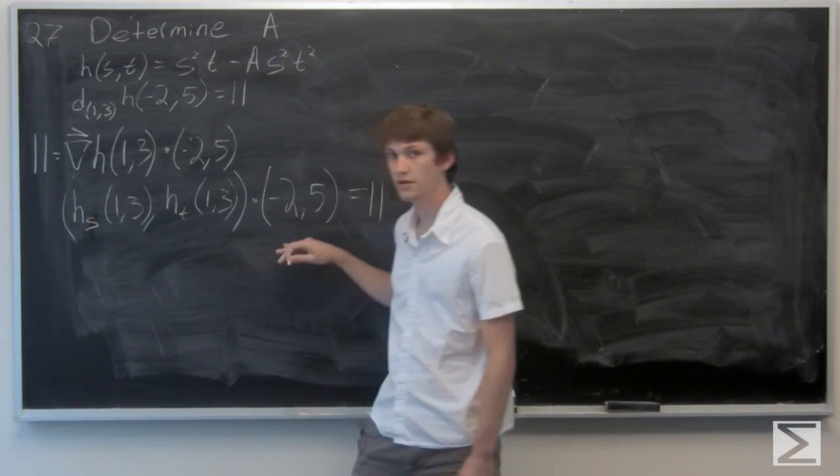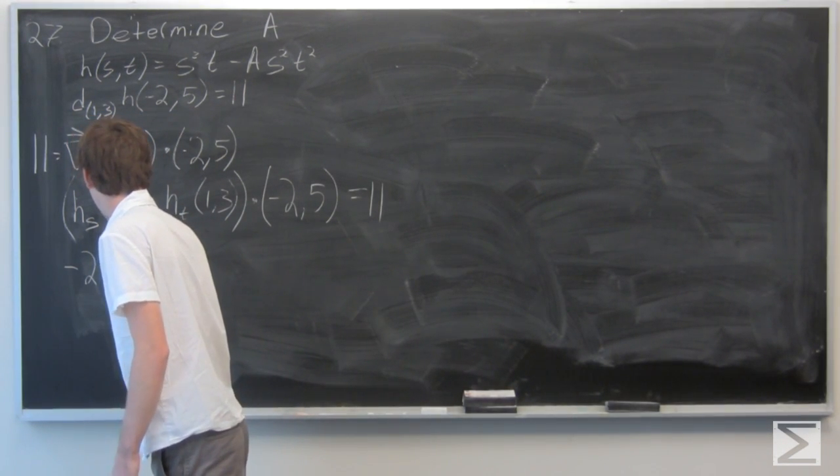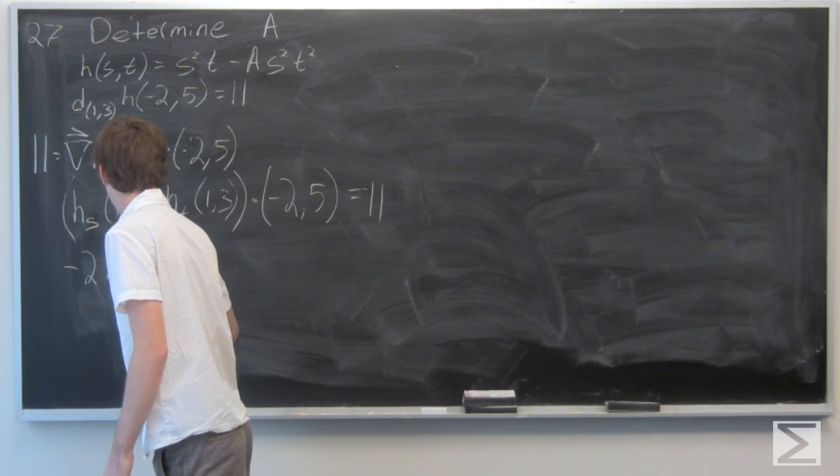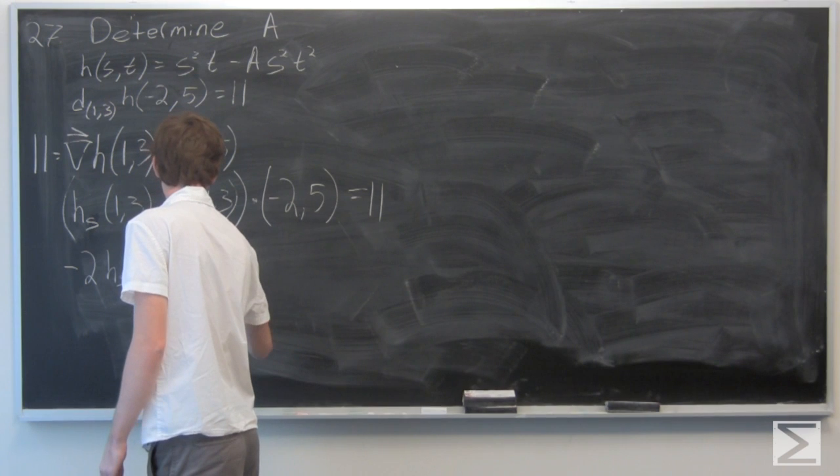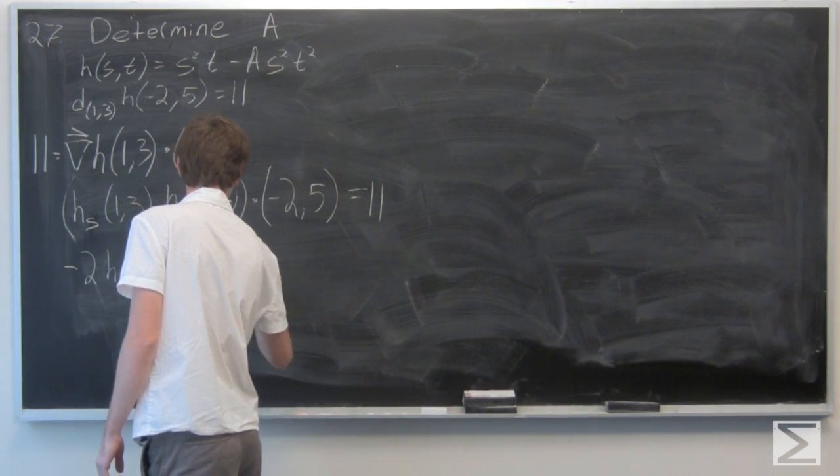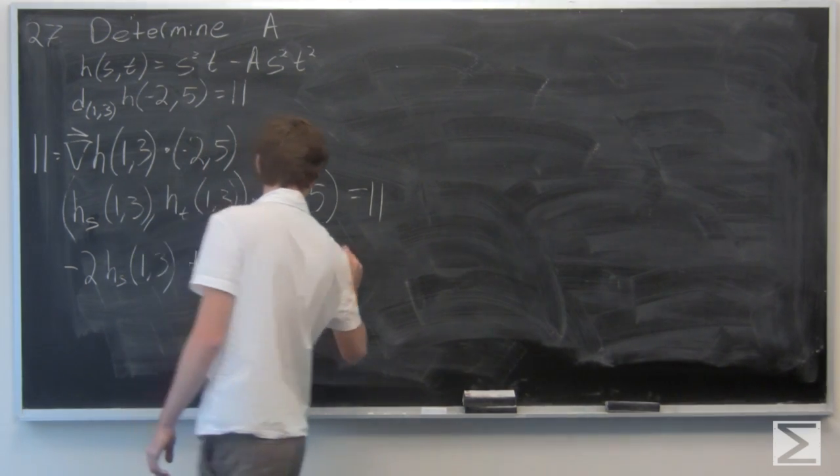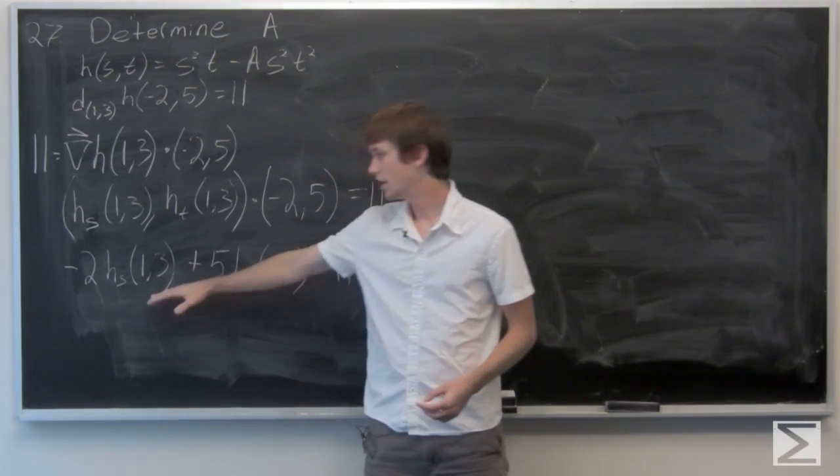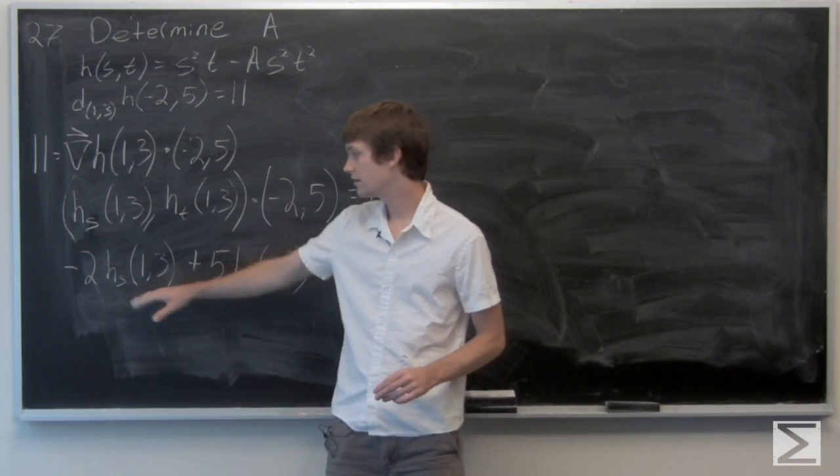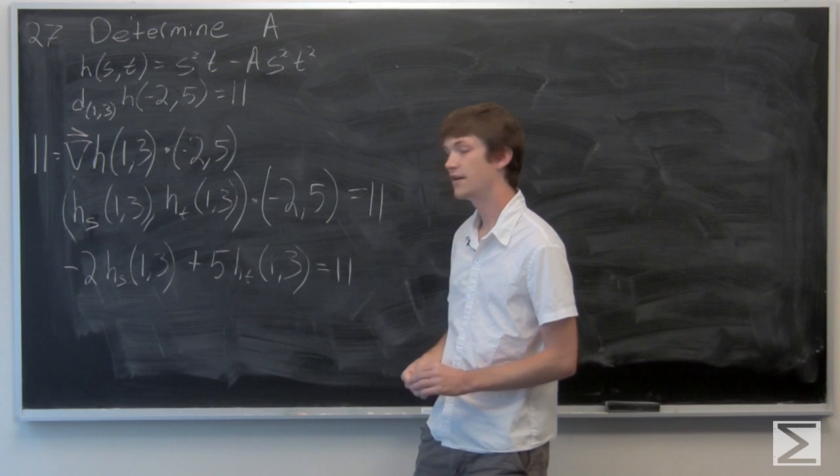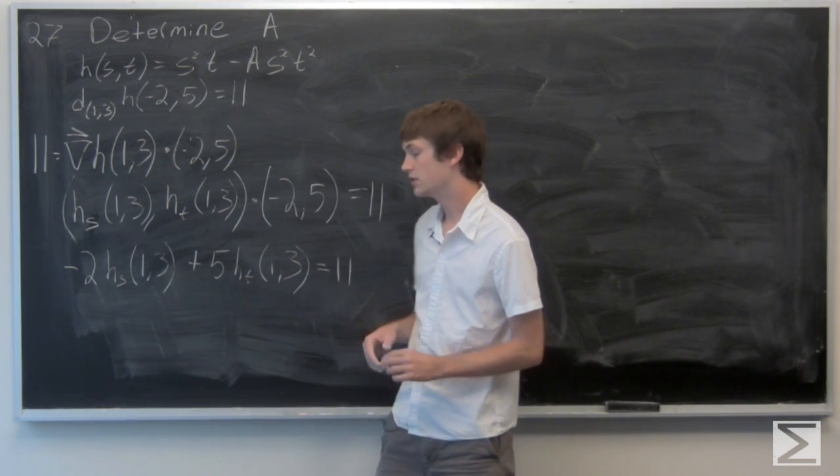Now we can compute this dot product, and we get that -2 times ∂h/∂s plus 5 times ∂h/∂t at the point is equal to 11.